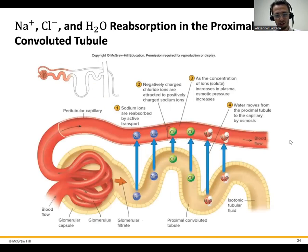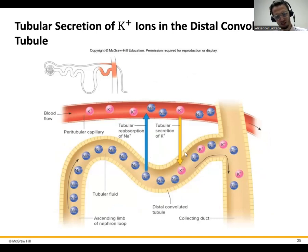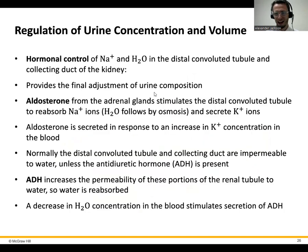When aldosterone acts on that distal convoluted tubule, it will increase the amount of sodium chloride pumped back into the blood, which allows water to follow it. That will increase your blood volume. So sodium would get pumped back in and then water goes back in as well. That also increases tubular secretion of potassium because the sodium-potassium pump works in that direction. So renin, aldosterone — that whole process helps increase reabsorption of sodium chloride, and thus water.